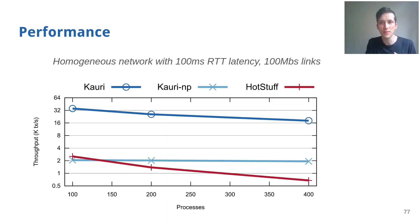This first particular experiment was executed with three different numbers of processes, namely 100, 200, and 400, in a setting with 100 millisecond round trip time and 100 Mbps links, which is like an inner European or inner US setting. Kauri is presented with the two blue lines, one with and one without pipelining, and HotStuff presented in the red line.